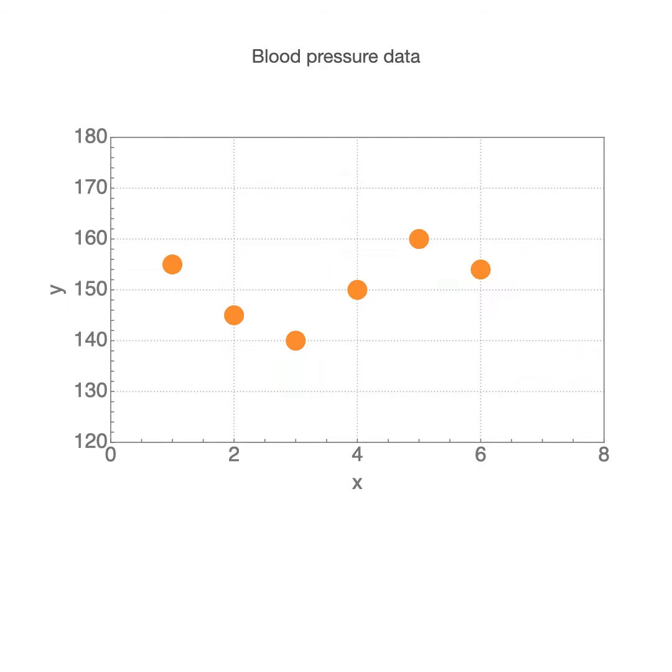Let's return to the acquisition of the blood pressure data. I noticed over the years that my general practitioner as a rule measures my blood pressure two or sometimes even three times, and then only the last value is recorded. Those are the values shown here.